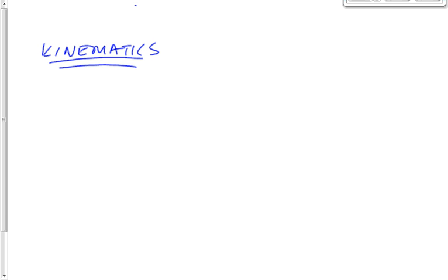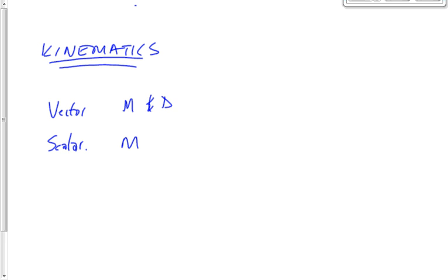The first thing we defined within kinematics was the difference between a vector and a scalar. There are lots of different quantities that are vectors and lots that are scalars. A scalar has only magnitude, while a vector has both magnitude and direction.